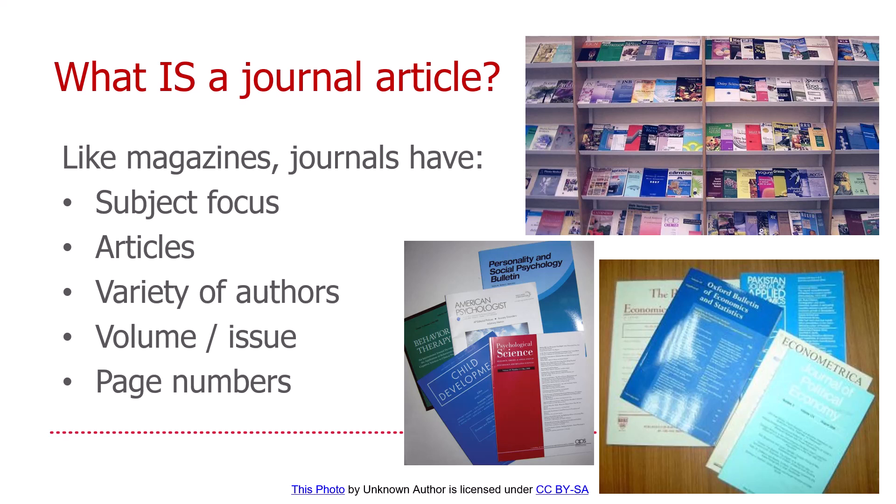An academic journal is very similar to a regular magazine because it also has a subject focus. Within each issue are articles written by a variety of authors. They have volume and issue information — perhaps not quite as descriptive as a magazine; it might be numbers like volume 43, issue 2 — and again there are page numbers to help you navigate. While a magazine is generally readable by anybody, an academic journal is written for academics, professionals, and students like yourself to help develop your learning and knowledge on that subject.